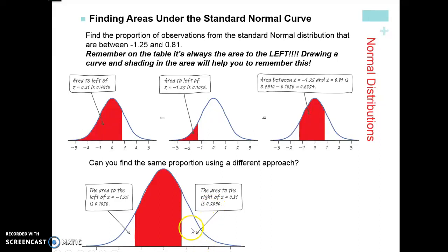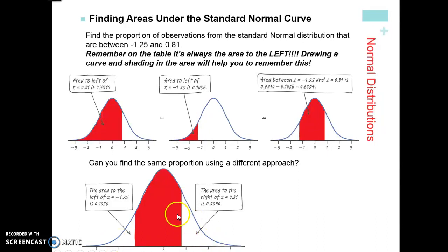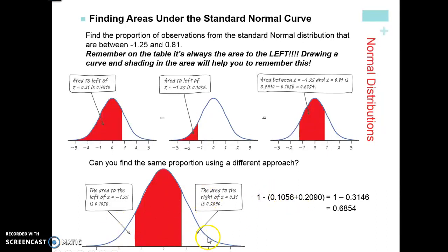The tricky part is that if you look up 0.81 on your chart, that's always going to be the area to the left. However, if you look up negative 0.81, since the curve is symmetric, the area of negative 0.81 is the exact same thing as the area of 0.81. So you'd look up negative 0.81 to represent that same area. Just keep in mind that your curve is symmetric. So if we take the whole area — 100% — minus the area to the left of negative 1.25 and to the right of 0.81, that gives the same answer of 0.6854.